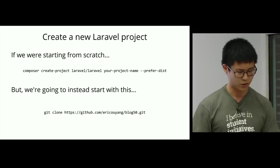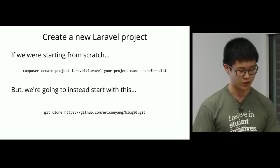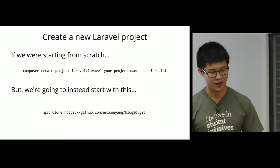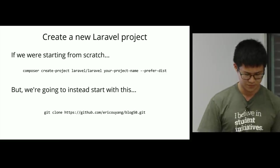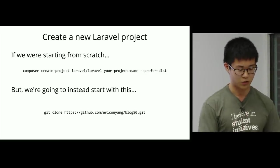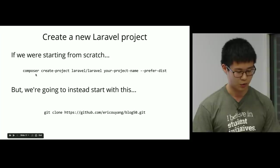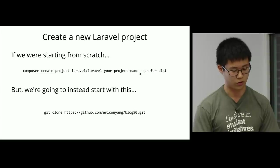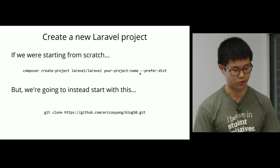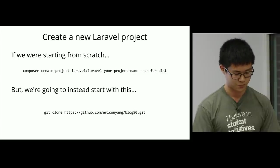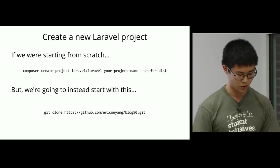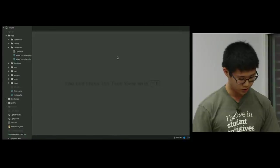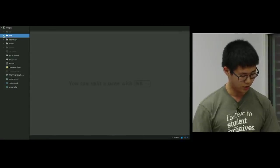After that, go ahead and create a new Laravel project. We're actually going to use some example code that I've put together to create this blog. But if you're starting from scratch, you would use the command 'composer create-project laravel/laravel' and then the name of your project. That will include all the distribution code for starting a new Laravel project — so for your CS50 final projects you'll probably want to use that command. Once you've done that, you'll get a fairly extensive number of files in blog50.